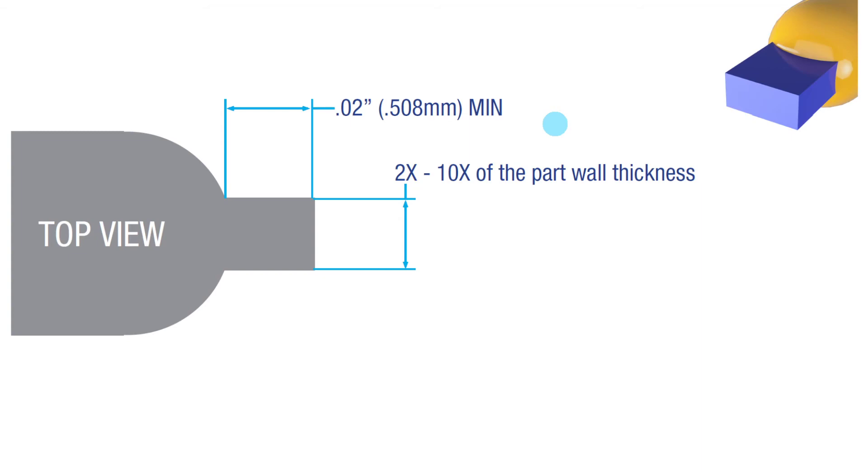Here's a top view of a theoretical edge gate. This dimension is 20,000 at its minimum, and the width is two to ten times the part wall thickness, looking at it from the top.